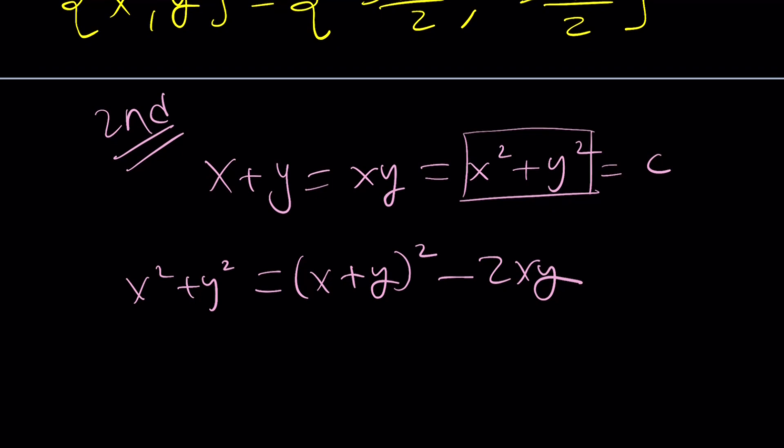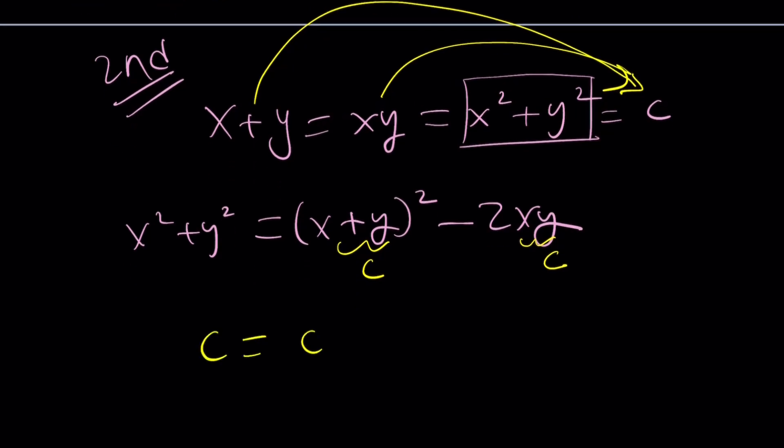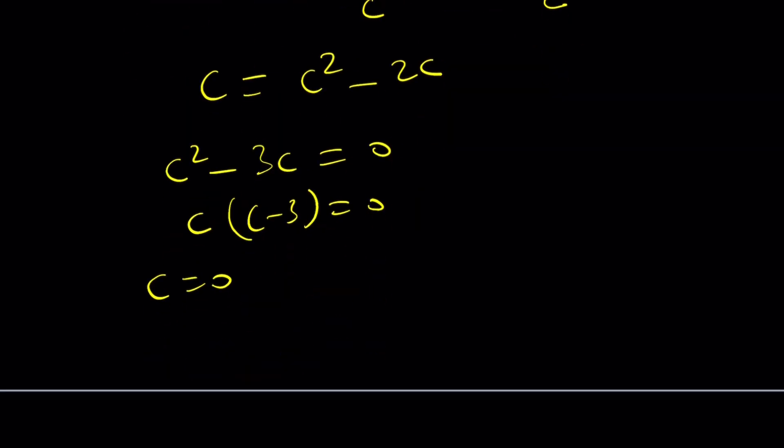So this is going to be c squared, and this is also c from our assumption. Therefore, we got something like this: c equals c squared minus 2c. Awesome. Then put everything on the same side. c squared minus 3c equals 0. And then c times c minus 3 equals 0. From here, we get two things. C equals 0, which gives us x equals y equals 0. Obviously, right?